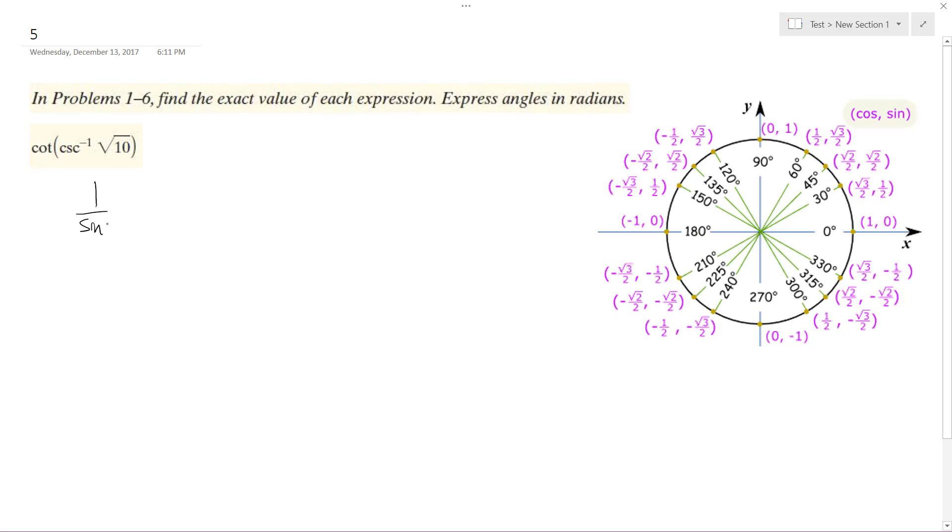Cosecant is the same thing as 1 over sine. So we can think of this as 1 over sine, which is equal to 1 over the square root of 10, which means that's going to be 1.